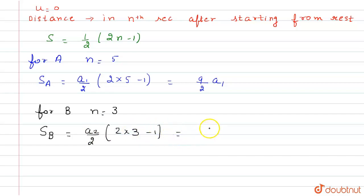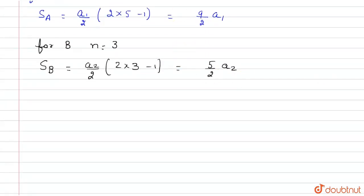_B. Now we equate: (9/2)a₁ = (5/2)a₂. That implies